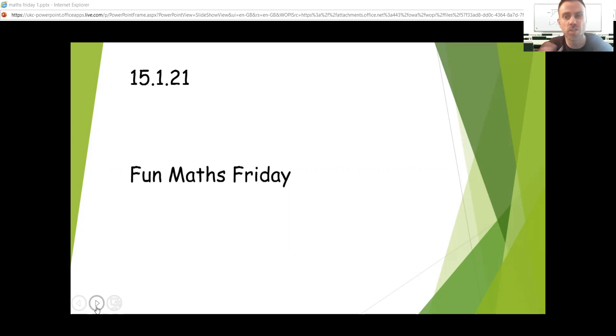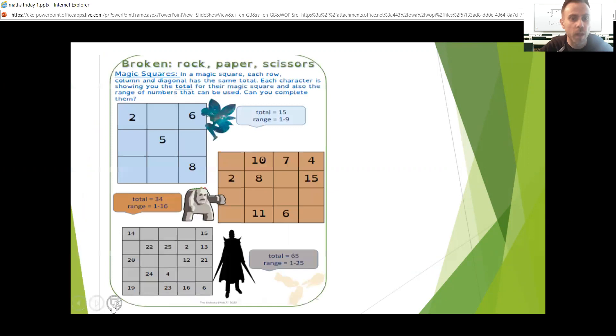First of all though, before I just talk you through the online stuff, I'm going to talk you through this. This is one of the pages from your English pack, your Broken Rock Paper Scissors pack. It's all about magic squares. So I thought this is still in our packs, we haven't used it, and this might be quite a nice little fun thing to have a go at,